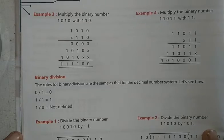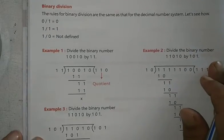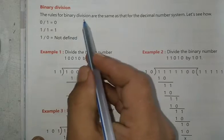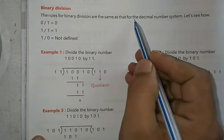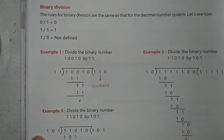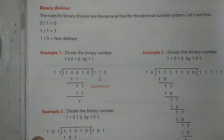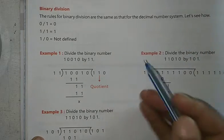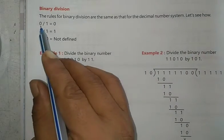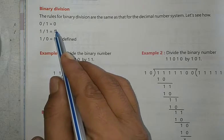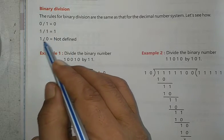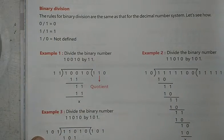Next topic is binary division. The rules for binary division are the same as for the decimal number system. Let's see how: 0/1 = 0, 1/1 = 1, and 1/0 is not defined.